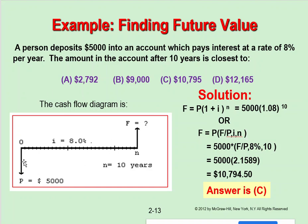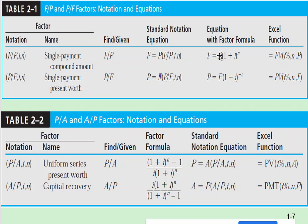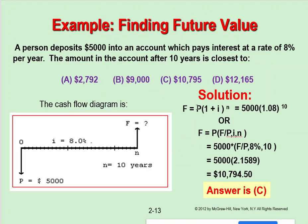To summarize the three approaches: first, using the formula — P equals five thousand dollars, i is 0.08, so (1 + i) = 1.08 raised to the power n = 10. This gives the future equivalent of the present worth after ten years. You just apply the formula and do the math.